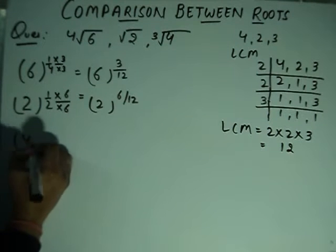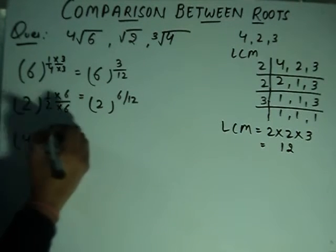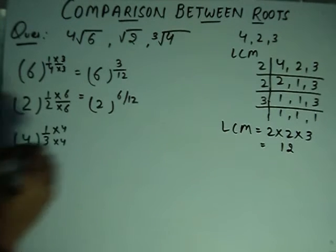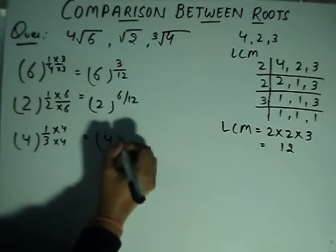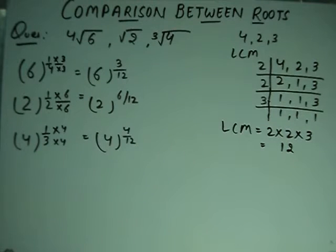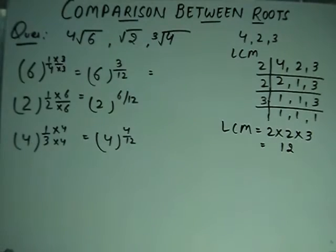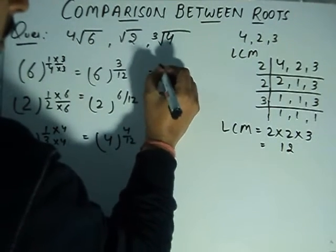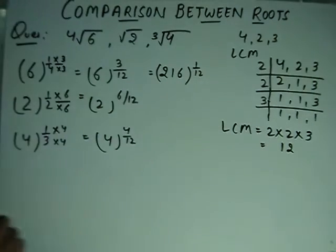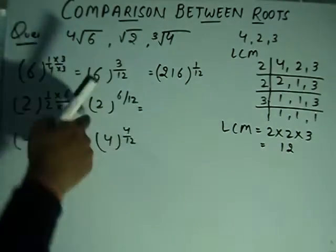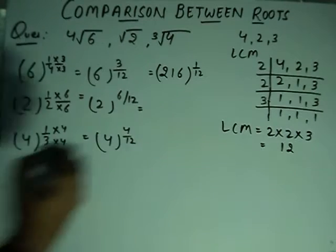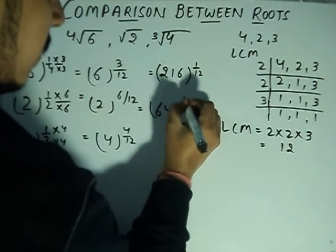For the next term, 4 to the power 1 by 3, I multiply by 4 and divide by 4 to get 4 to the power 4 by 12. Now all terms have the common exponent 1 by 12. Converting the bases: 6 to the power 3 gives 216, 2 to the power 6 gives 64.